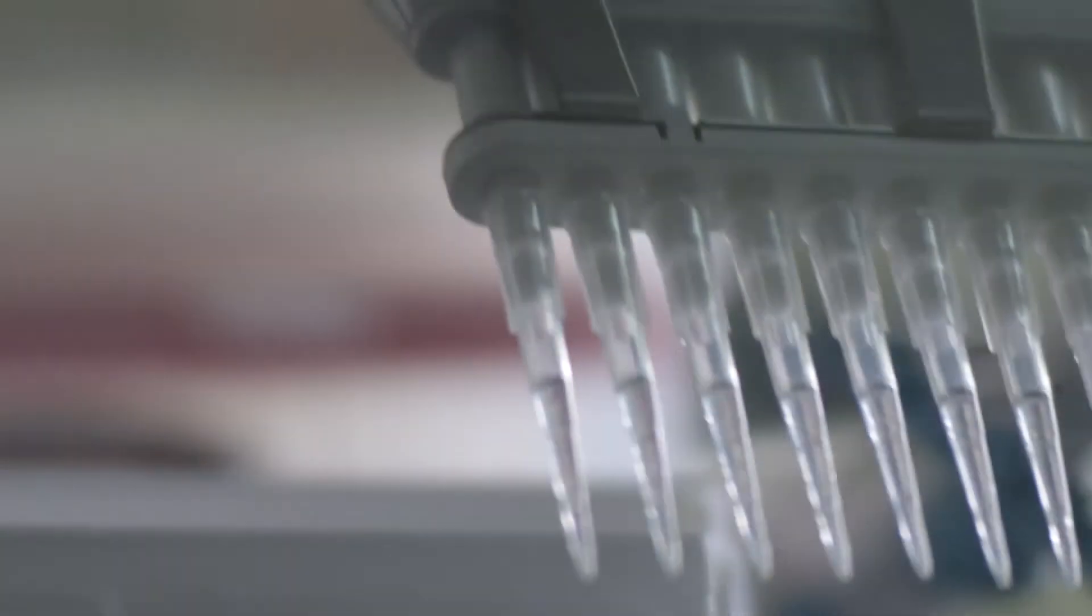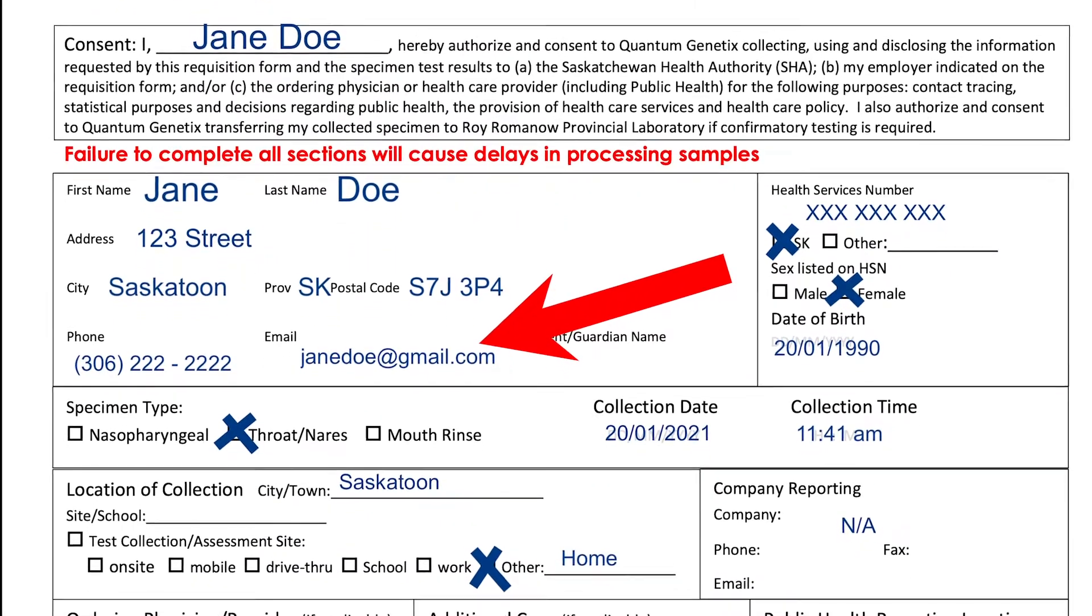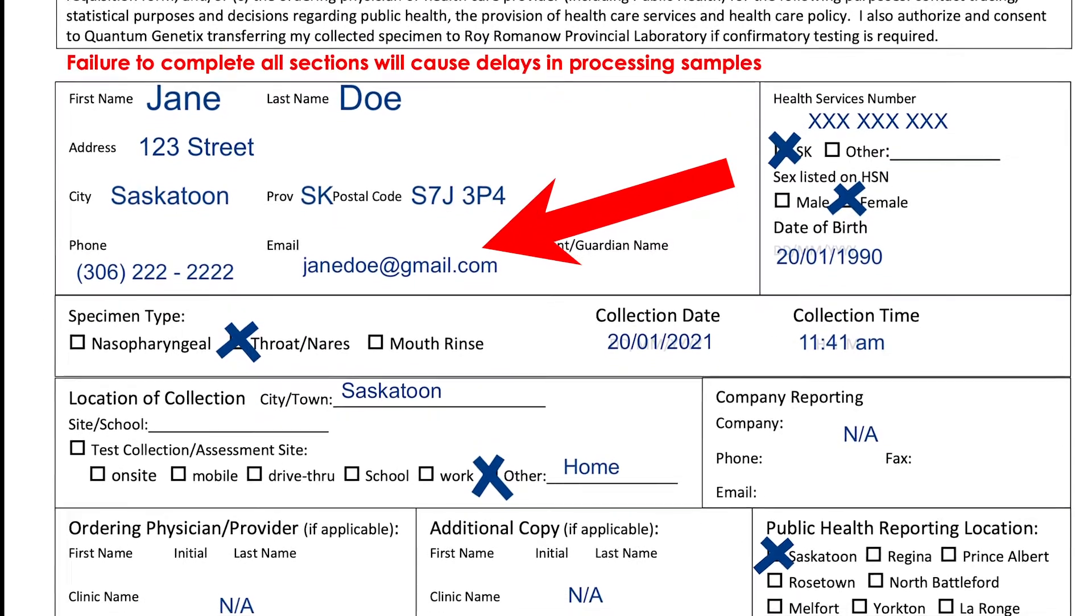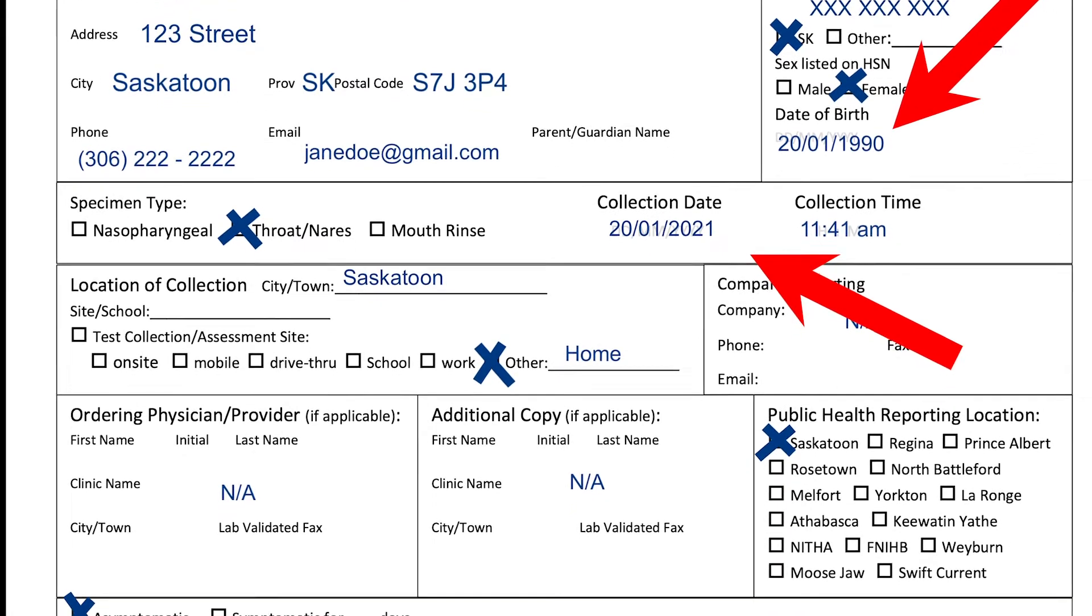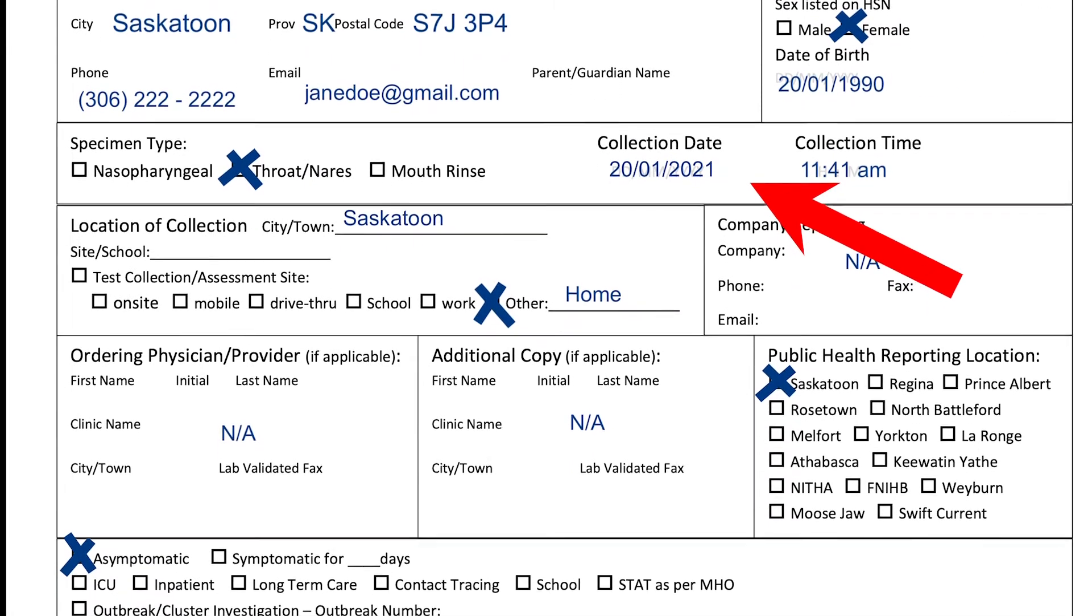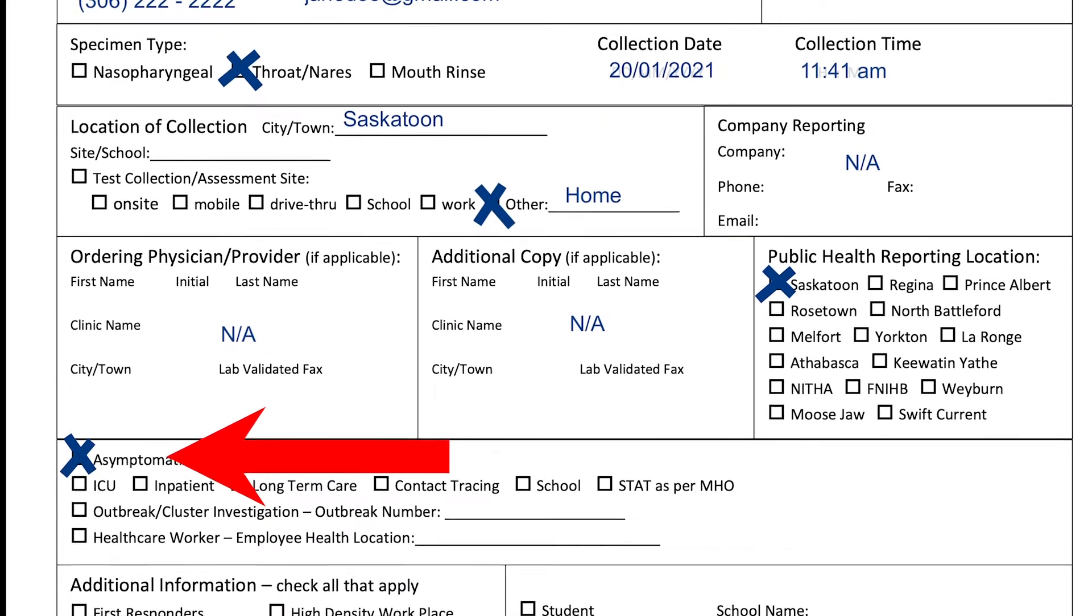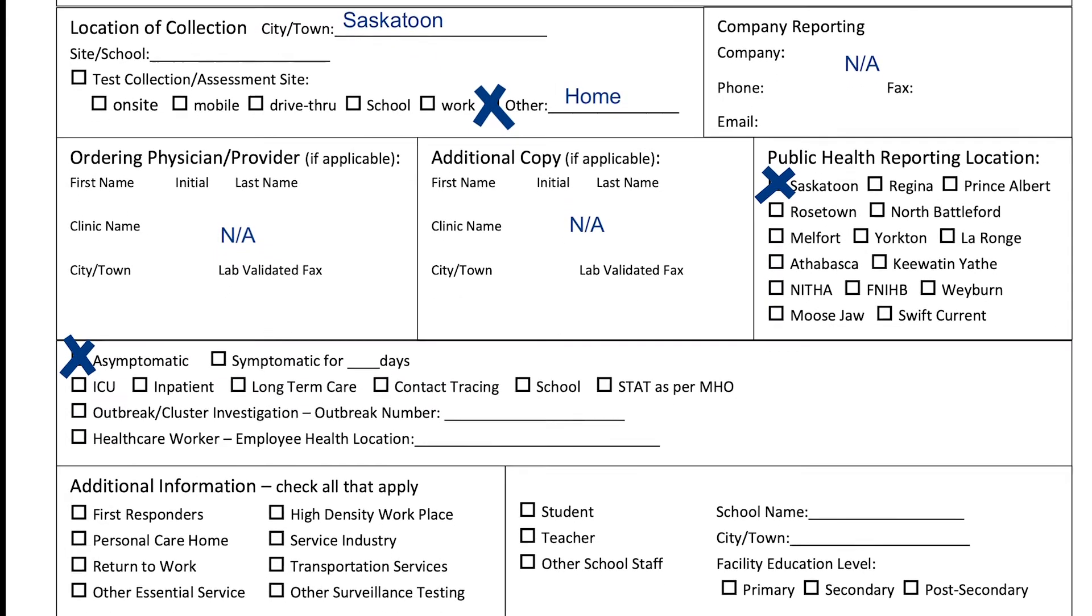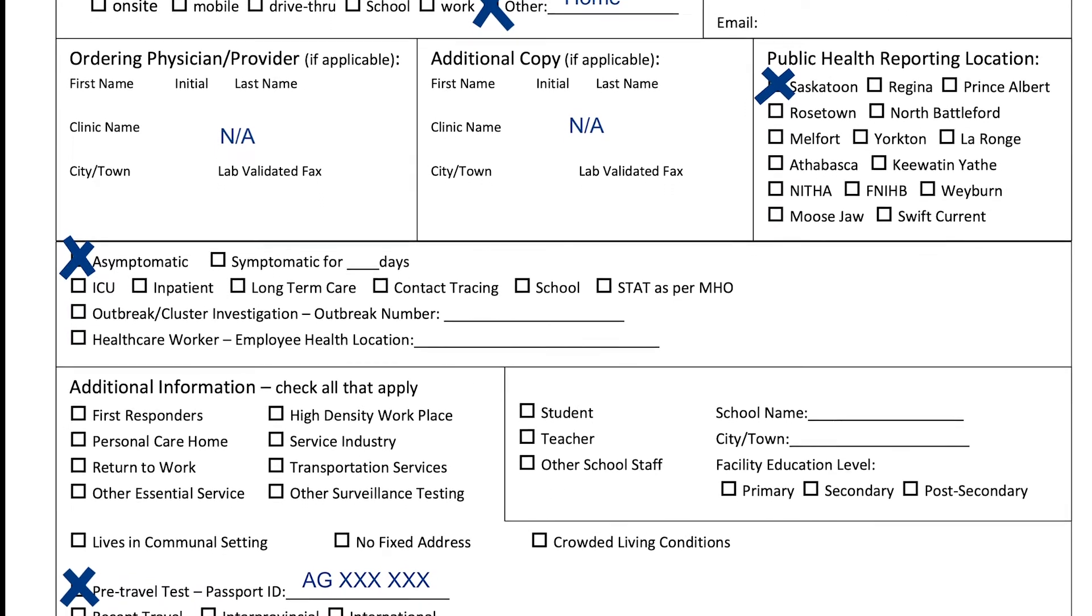Once you return your kit to Quantum Genetics, we will contact you if there are any issues with your requisition form. Please ensure that your email address is written clearly and easily to read, as well as ensuring to fill out your date of birth, collection time and date. And please ensure that the asymptomatic box is ticked on your form. Please ensure to read through the requisition form twice to have all fields completed in order for us to process your results.